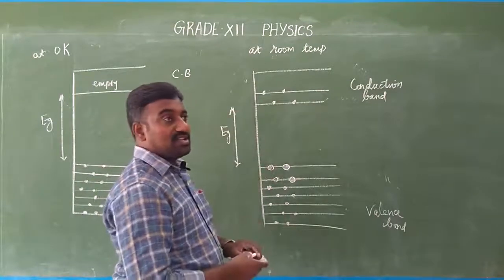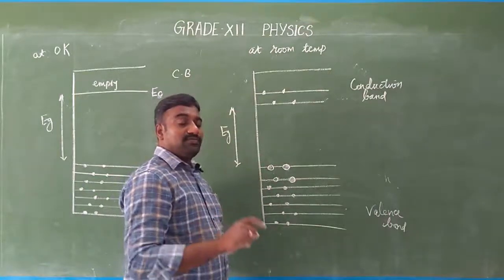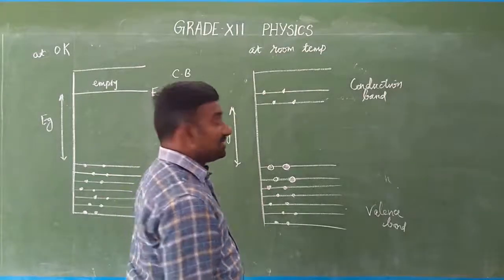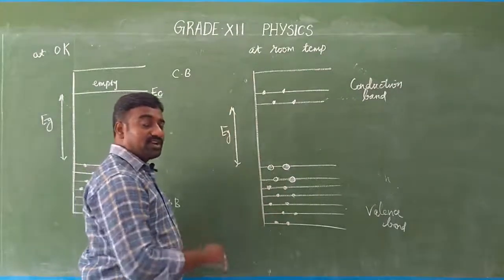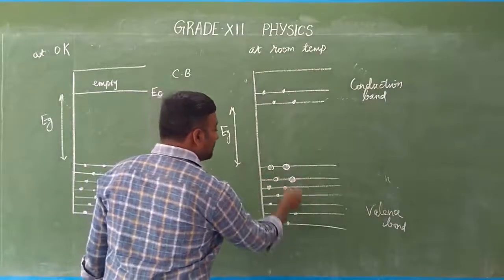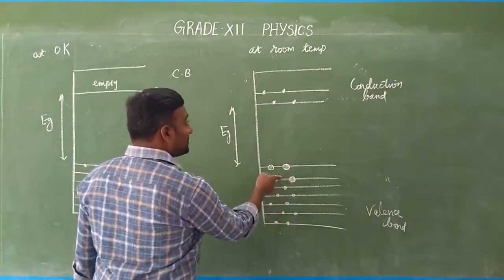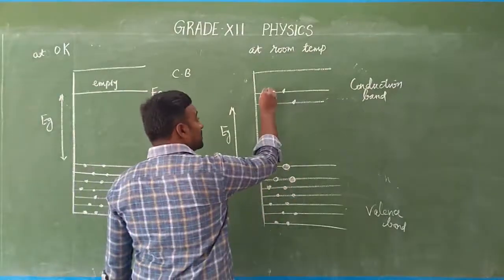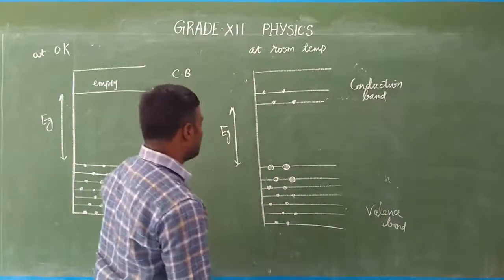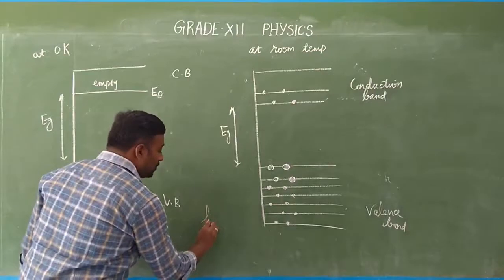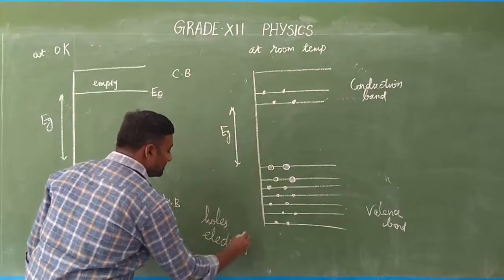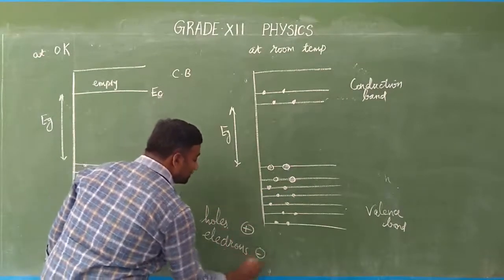The number of electrons transferred equals the number of holes produced. Therefore, the total current equals the sum of electron current and hole current. The charge of holes — which are vacancies — is positive, and for electrons it is negative. These are the main charge carriers in intrinsic semiconductors.